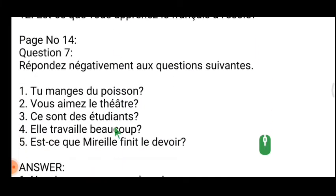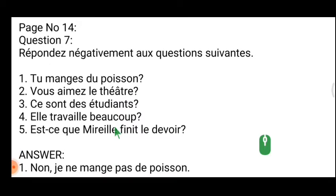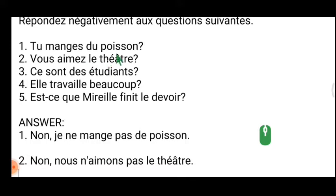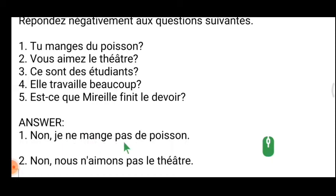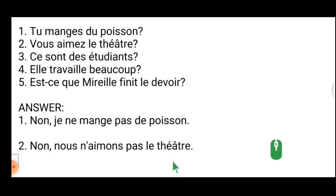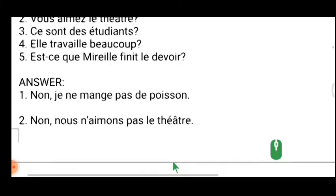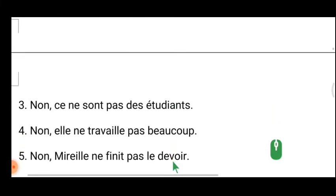Moving on to the next exercise — you will be given questions and you have to reply negatively. For example: 'Tu manges du poisson?' — 'Non, je ne mange pas de poisson.' When the question is in 'tu,' the answer turns to 'je.' Whenever it is a negative answer, 'ne' and 'pas' must accompany the verb — 'ne' before and 'pas' after. All questions in this exercise follow this single rule.